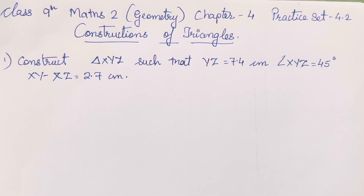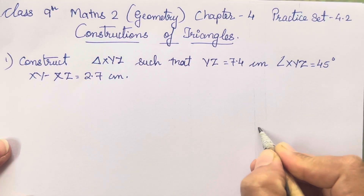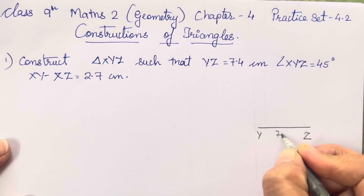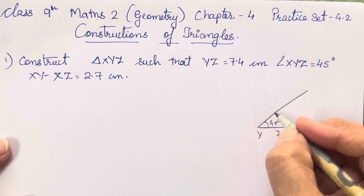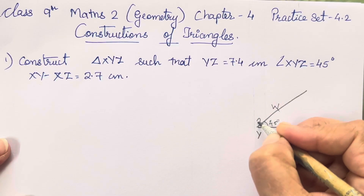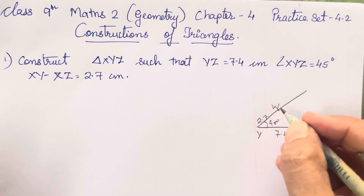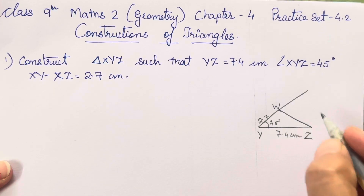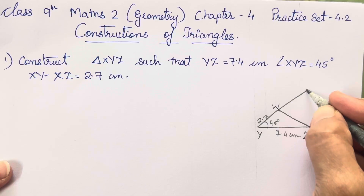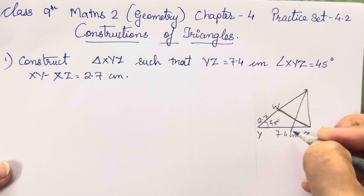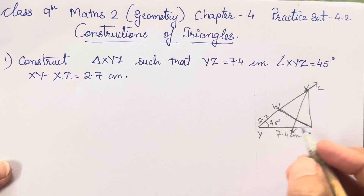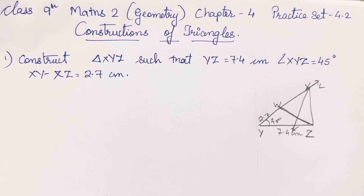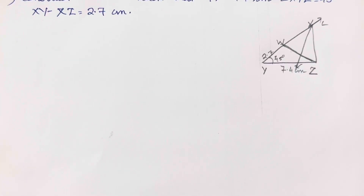First we will draw a rough diagram in which y and z is supposed to be 7.4 cm. Angle y is supposed to be 45 degrees. W is going to be 2.7. Now this is the point that we have taken by our own. Then we have to draw a perpendicular bisector to this line which will cross this ray. So this point is going to be x and this ray is supposed to be l. I hope this rough diagram is clear to everyone.